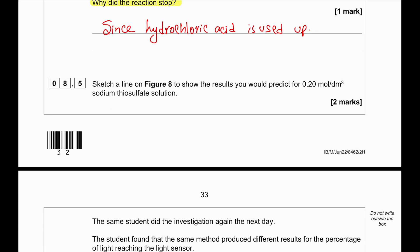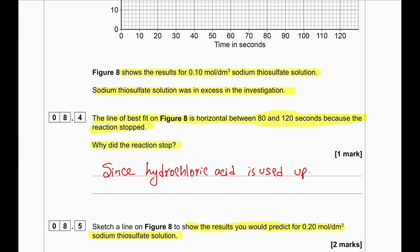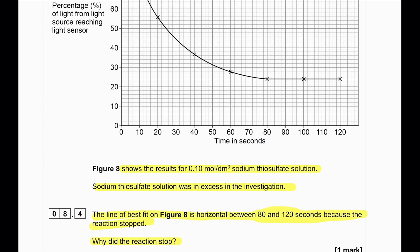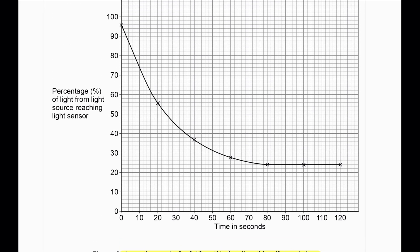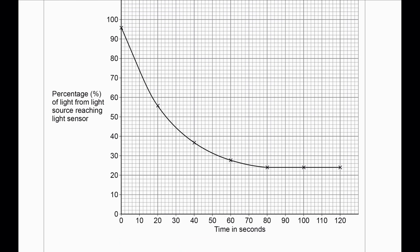Sketch a line on figure 8 to show the results you would predict for 0.2 mol/dm³ sodium thiosulfate solution. For the higher concentration, we would see the reaction be similar but much faster, and it would reach the same final line but within a shorter period of time.